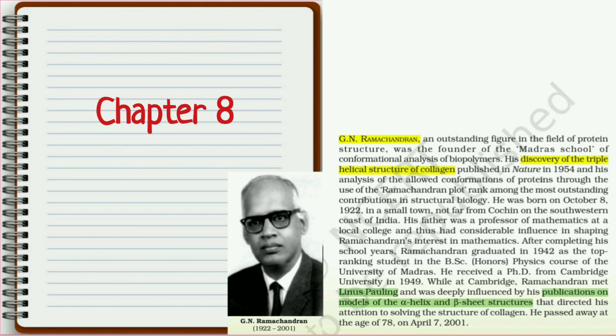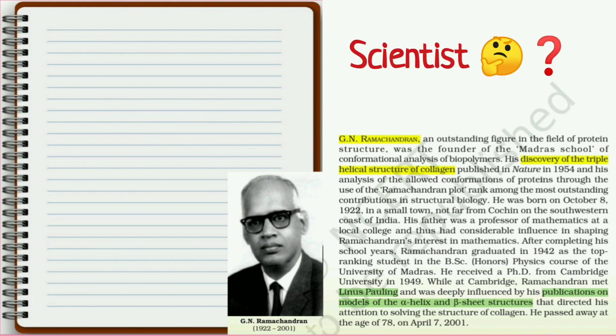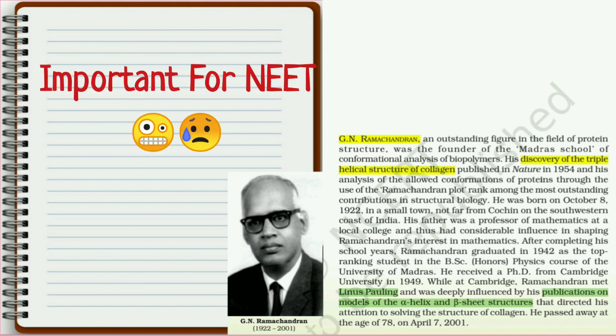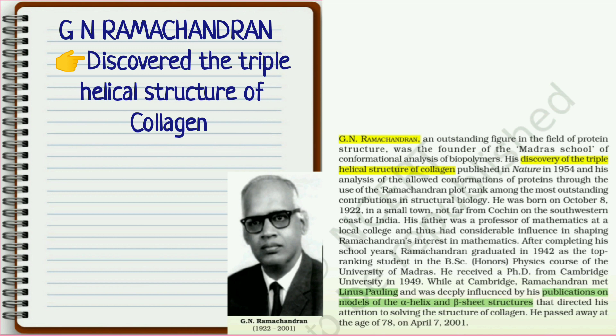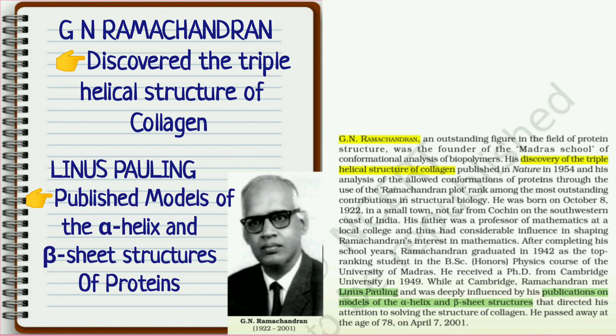When every section of topics in your text begins, there is an introductory part about a few scientists, and this is very important for NEET aspirants. The first point is about scientist G.N. Ramachandran who discovered the triple helical structure of collagen. The next point is about Linus Pauling who published the alpha helix and beta sheet structure of proteins.